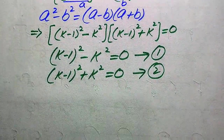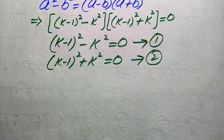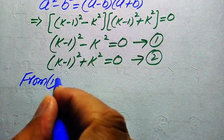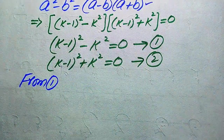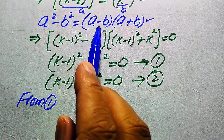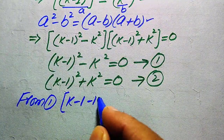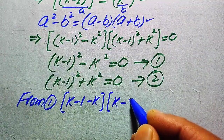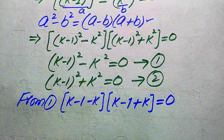To find the roots from Equation 1, we apply the difference of squares formula again. We write it as (k minus 1 minus k) times (k minus 1 plus k) equals 0.